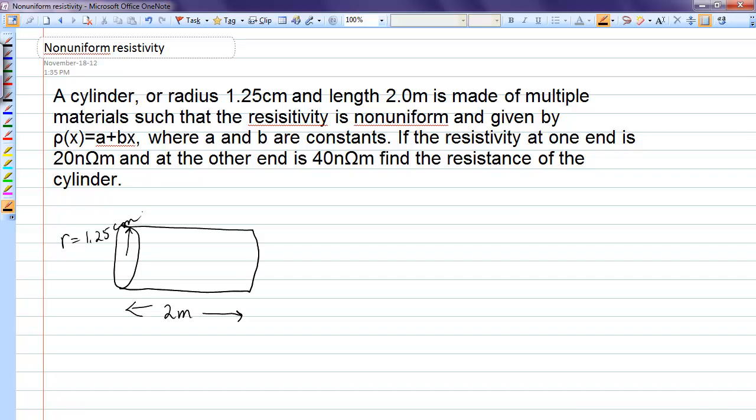Now we're trying to find the resistance of this cylinder between its ends. Because the resistivity is non-uniform, once again, we're going to have to slice this cylinder into disks. Thickness of the disks will be dx.